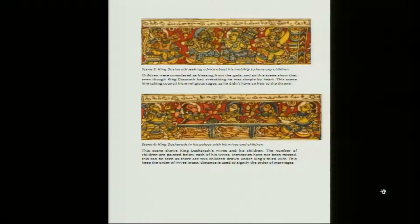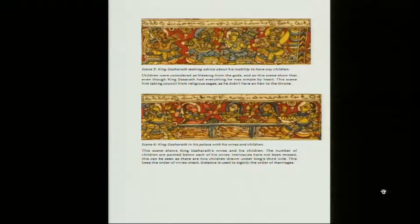After that, in the picture King Dasharatha is seeking advice about his inability to have any children. Children were considered blessings from the gods, and even though King Dasharatha had everything, he could not bear the lack of children in his life. This scene shows him taking counsel from religious sages — he did not have an heir to the throne, so he seeks a son and all the sages are sitting there.